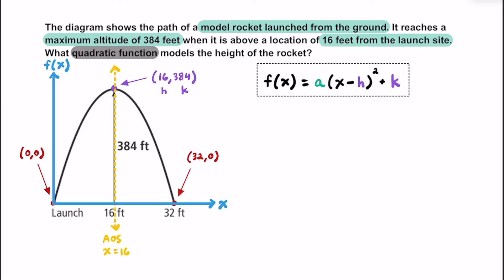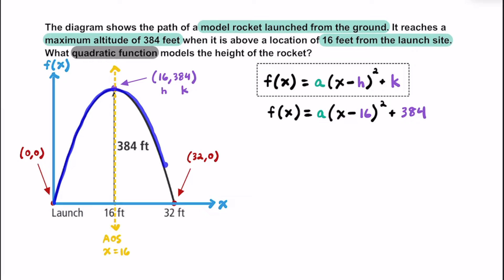Let's start by substituting in those numbers for h and k. Now that we have h and k substituted in, the only thing we really need to find is the value of a, which is going to tell us if we have a vertical stretch or shrink and whether there's a reflection. Since our parabola is upside down compared to the normal parent function, this is going to be a negative a value since we are opening the parabola down and it has a maximum instead of a minimum.